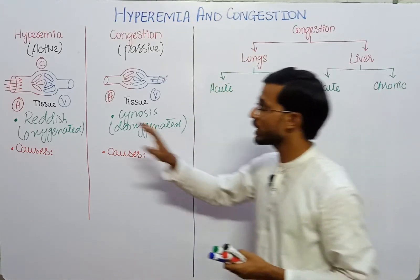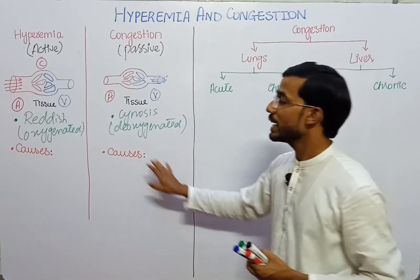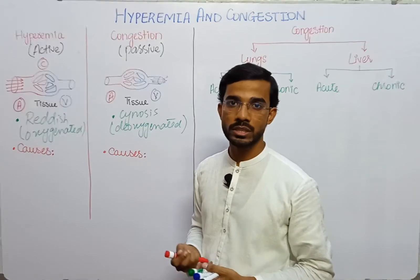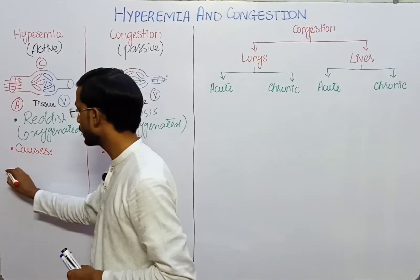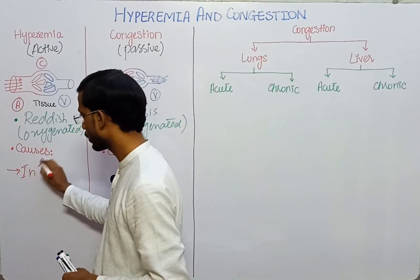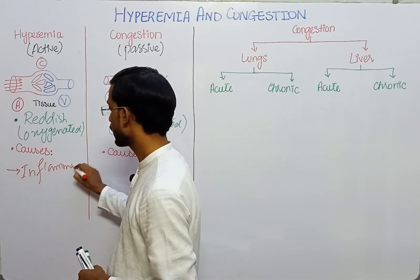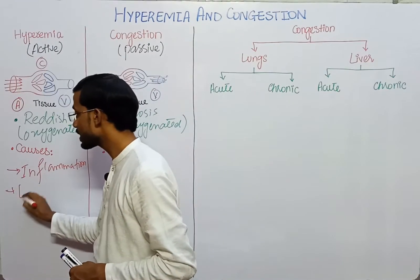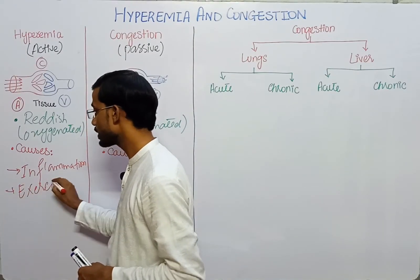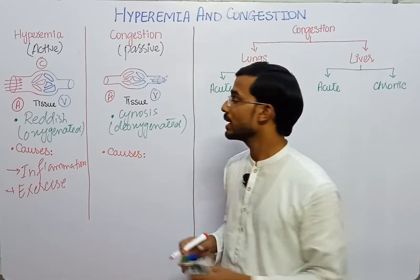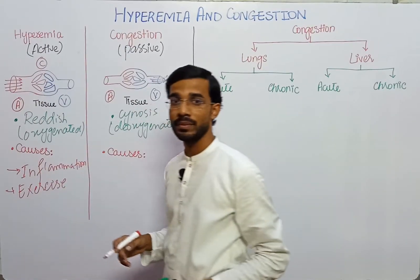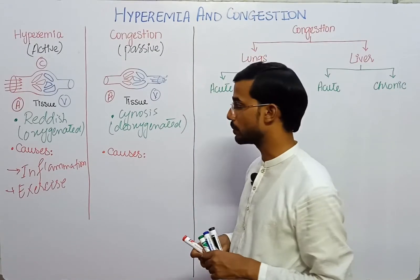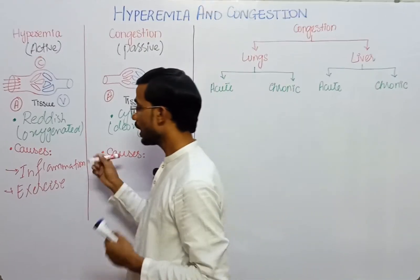What will be the causes of hyperemia and congestion? In hyperemia, in what situation can arterioles dilate? In inflammation — yes, they can dilate in inflammation. Also due to exercise: in exercise, blood flows rapidly and arterioles dilate, which can also cause hyperemia. And there are several other situations.